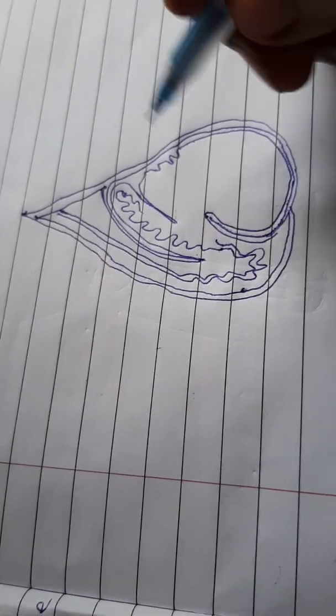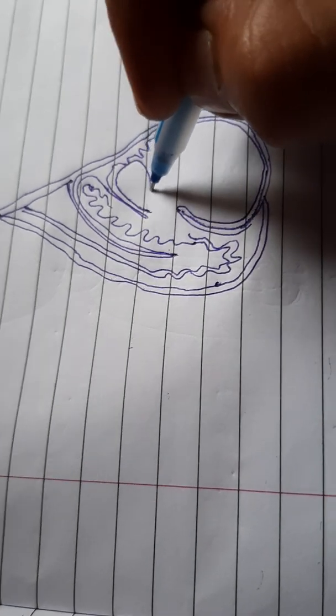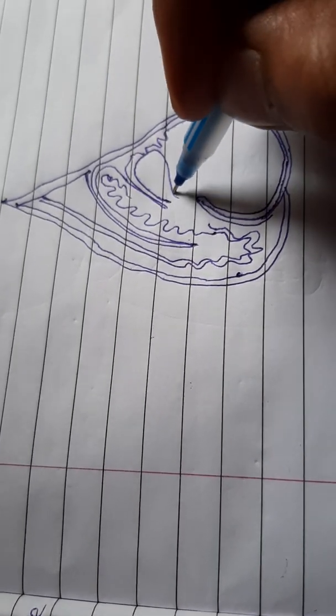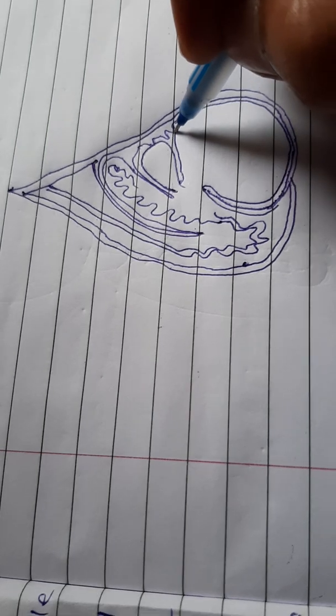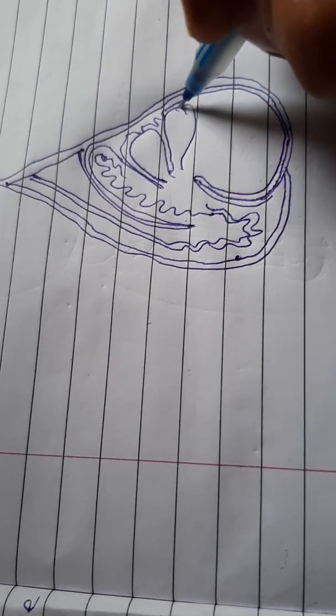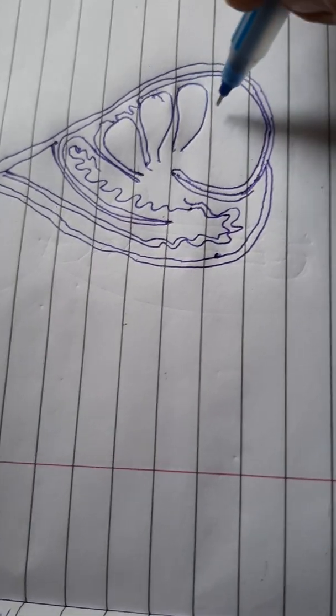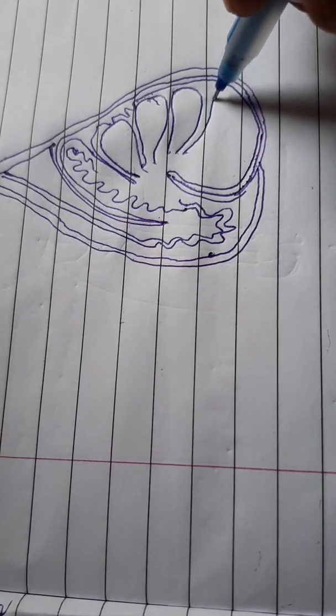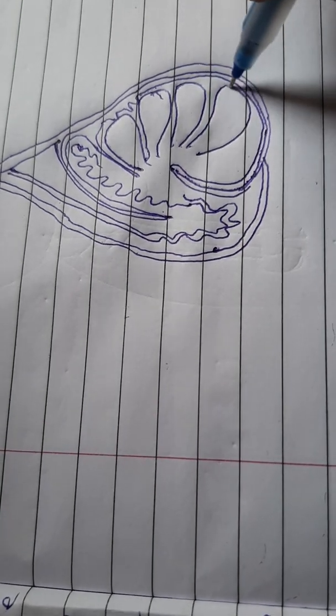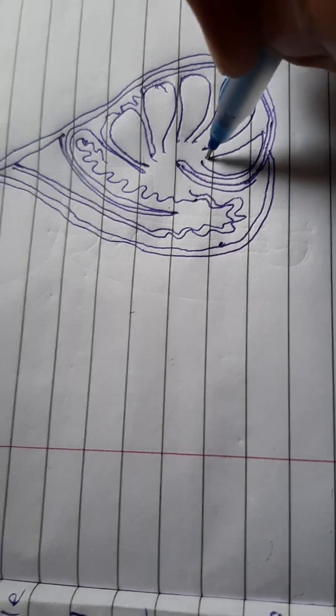After that draw a lobule. Each has 250 seminiferous tubules presented. So these are the lobules, okay.